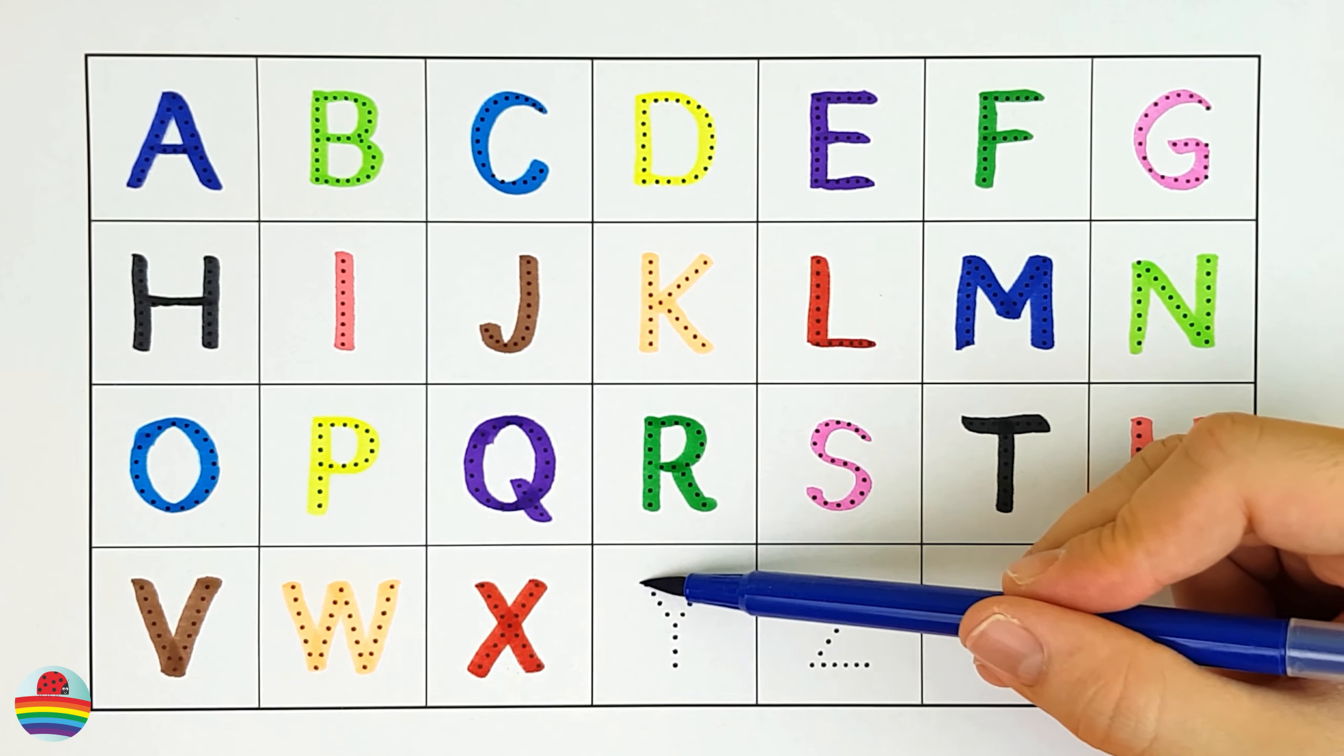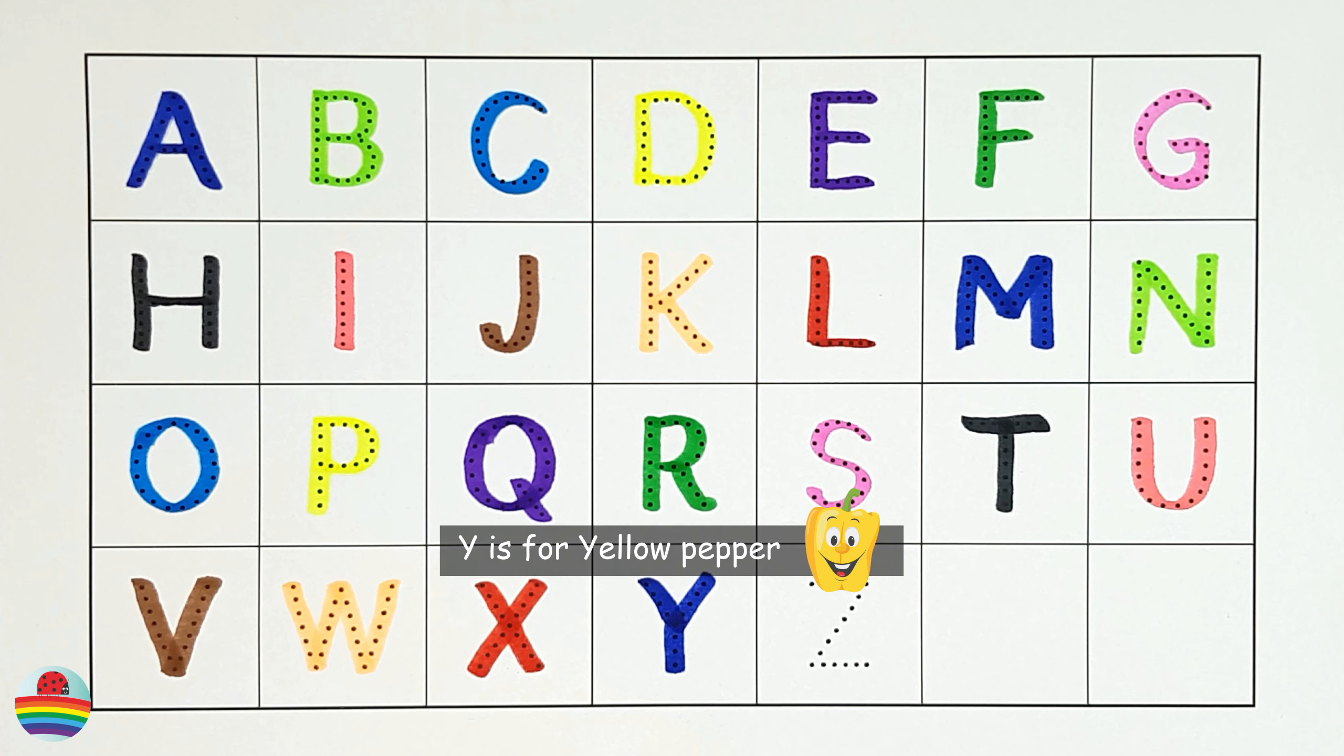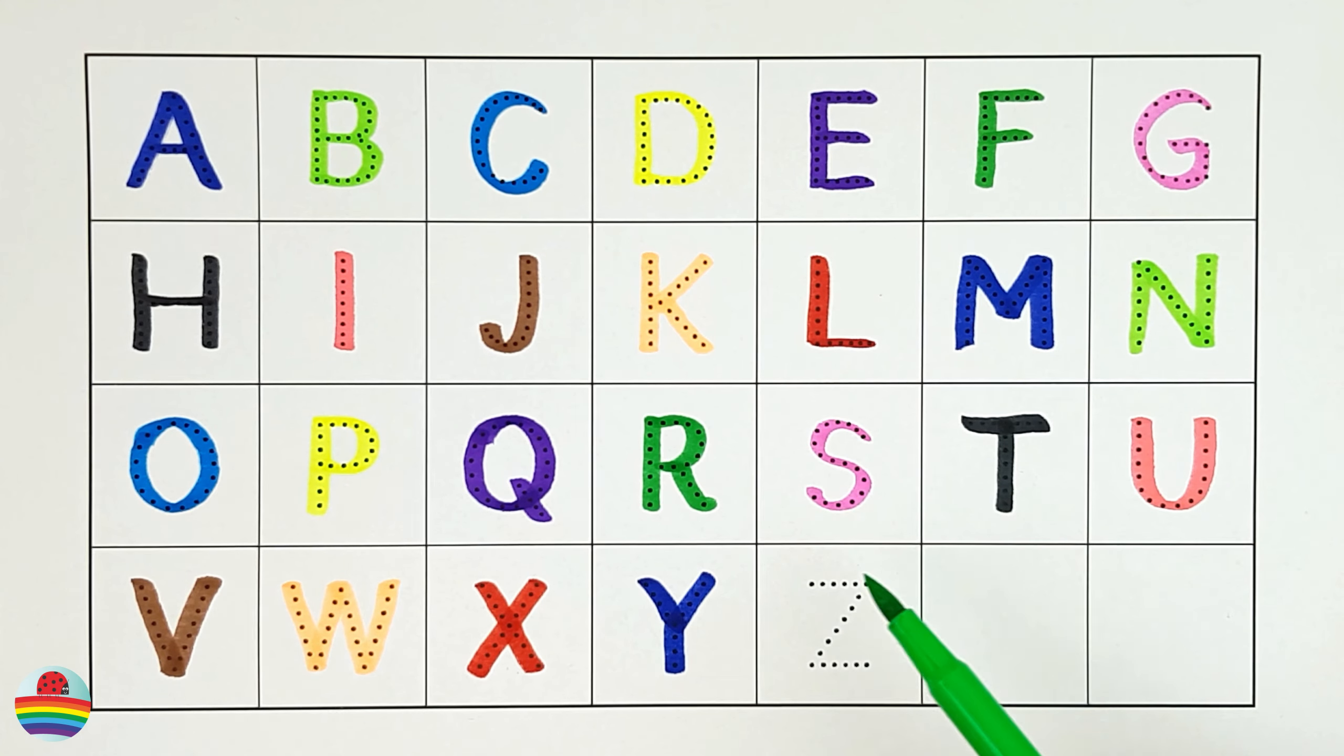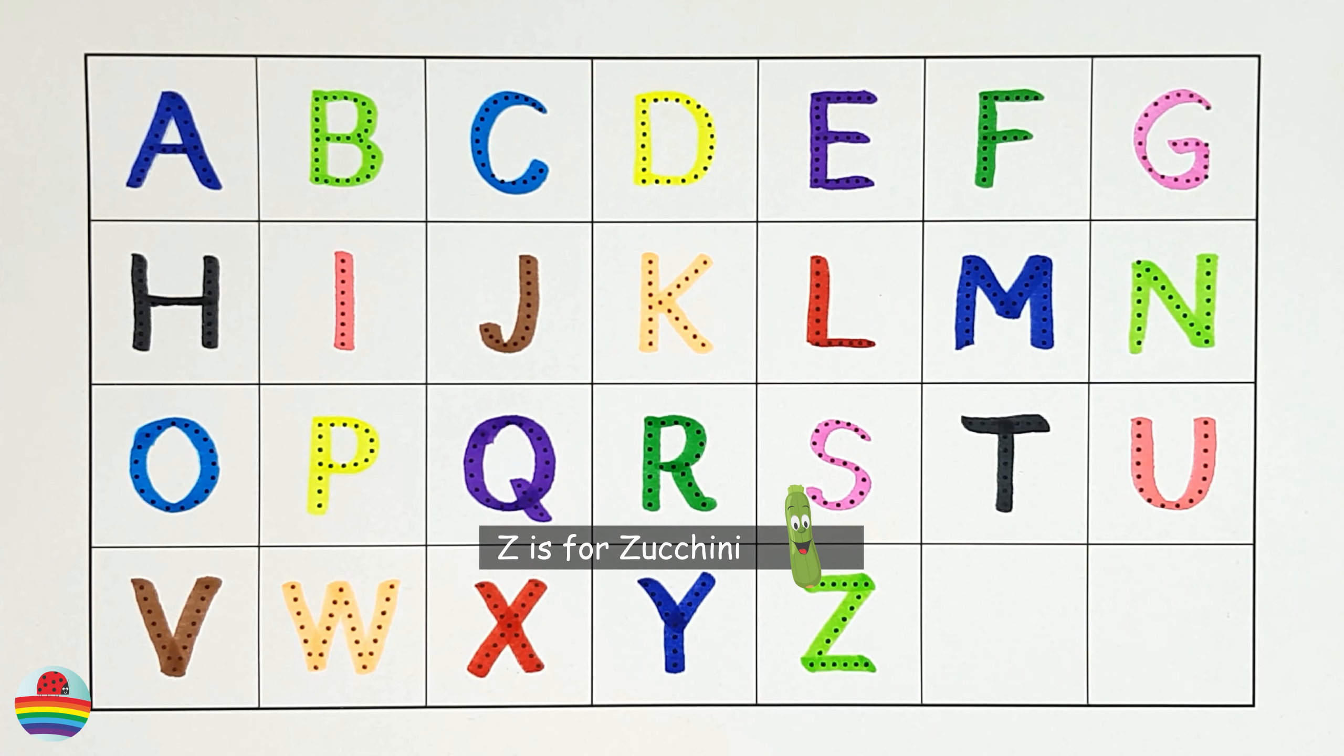Y. Y is for yellow pepper. Z. Z is for zucchini. Z.